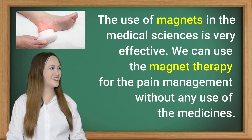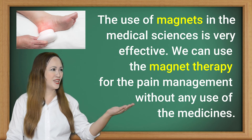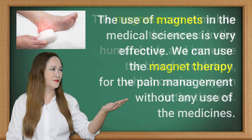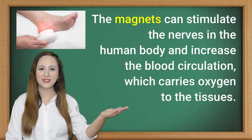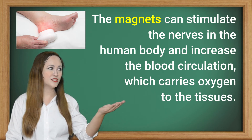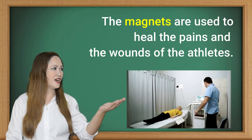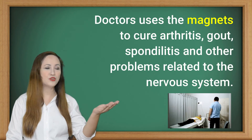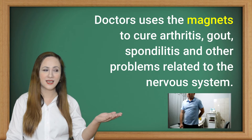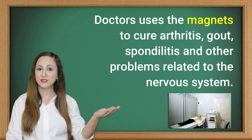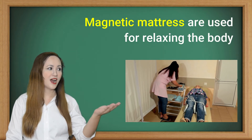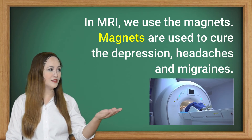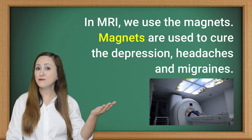The use of magnets in medical sciences is very effective. We can use magnet therapy for pain management without any use of medicines. Magnets can stimulate the nerves in the human body and increase blood circulation, which carries oxygen to the tissues. Magnets are used to heal the pains and wounds of athletes. Doctors use magnets to cure arthritis, gout, spondylitis, and other problems related to the nervous system. Magnetic mattresses are used for relaxing the body. In MRI, we use magnets. Magnets are also used to cure depression, headaches, and migraines.